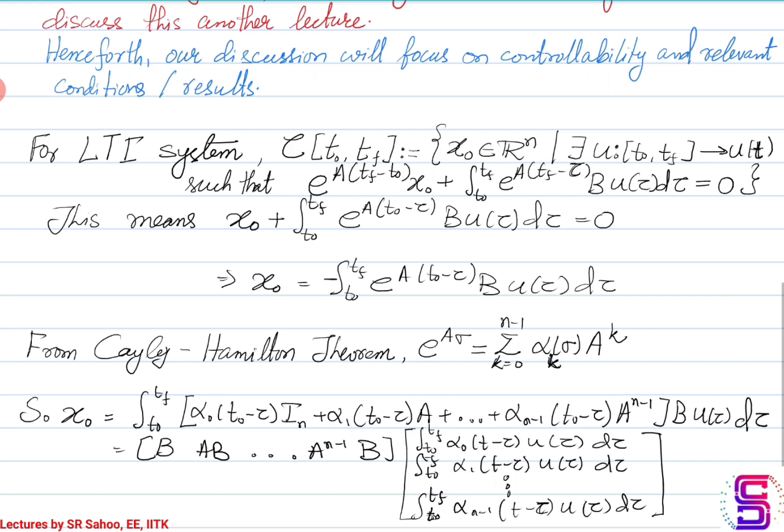This matrix B, AB, A²B, ..., A^{n-1}B will have a size of n by mn, and the coefficient column matrix will be of size mn by 1. We will call the matrix B, AB, A²B, ..., A^{n-1}B and label it as Qc.